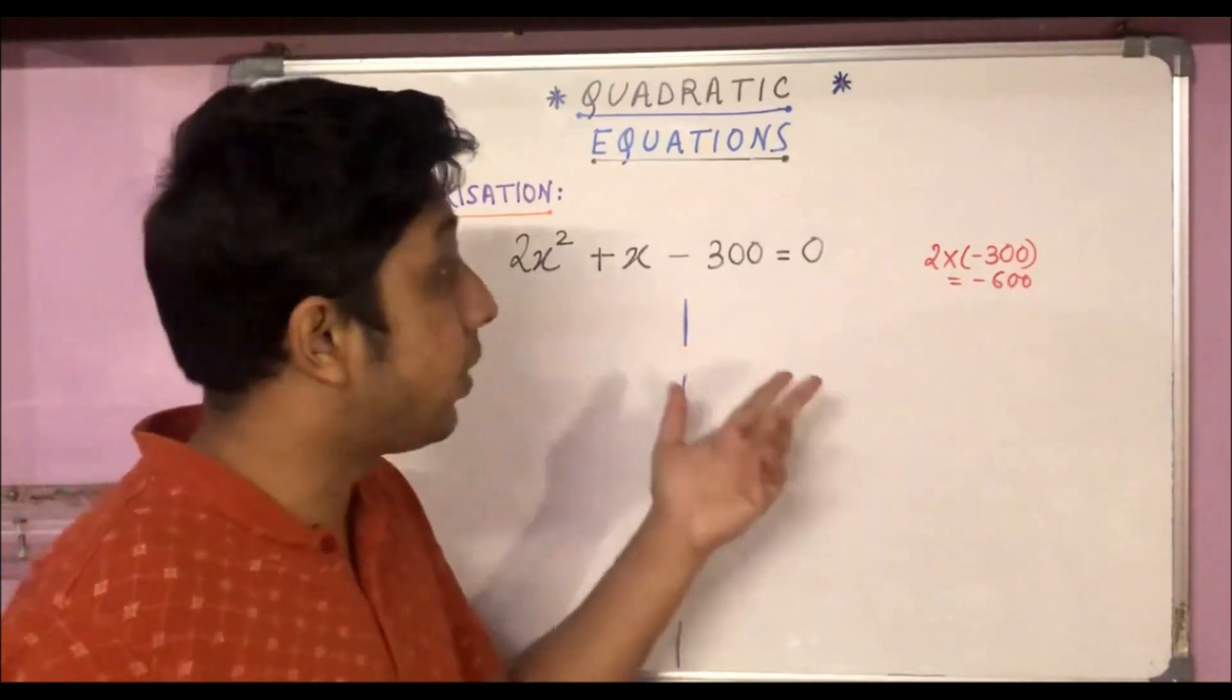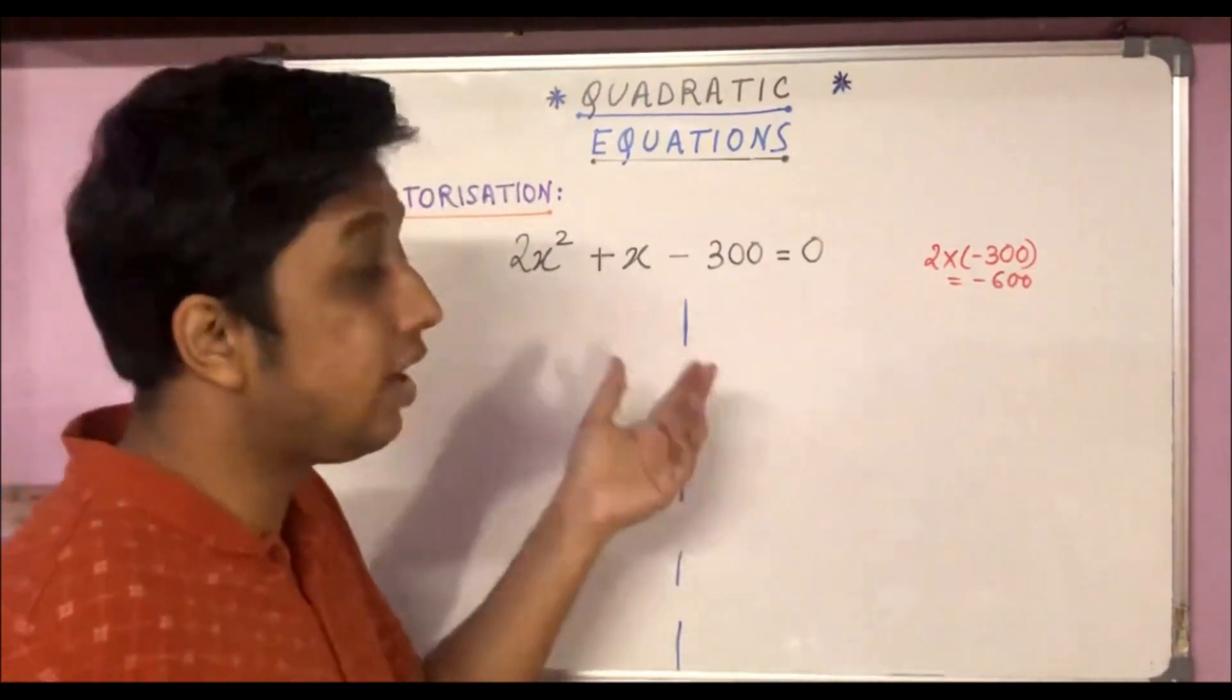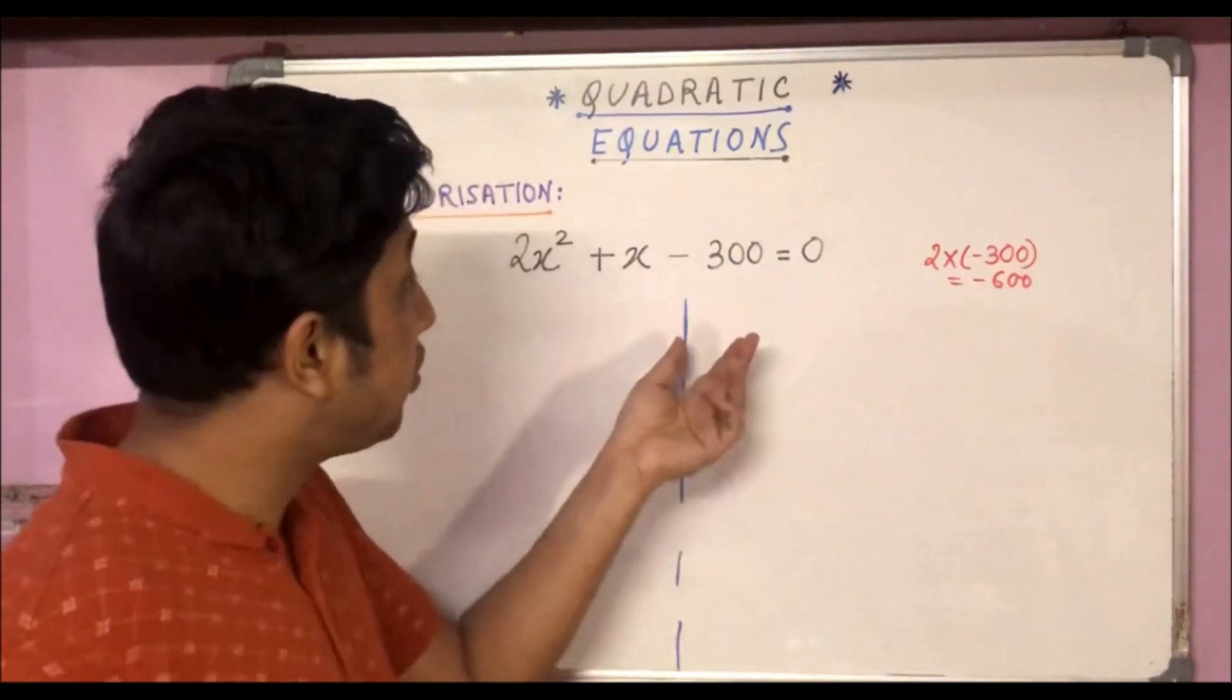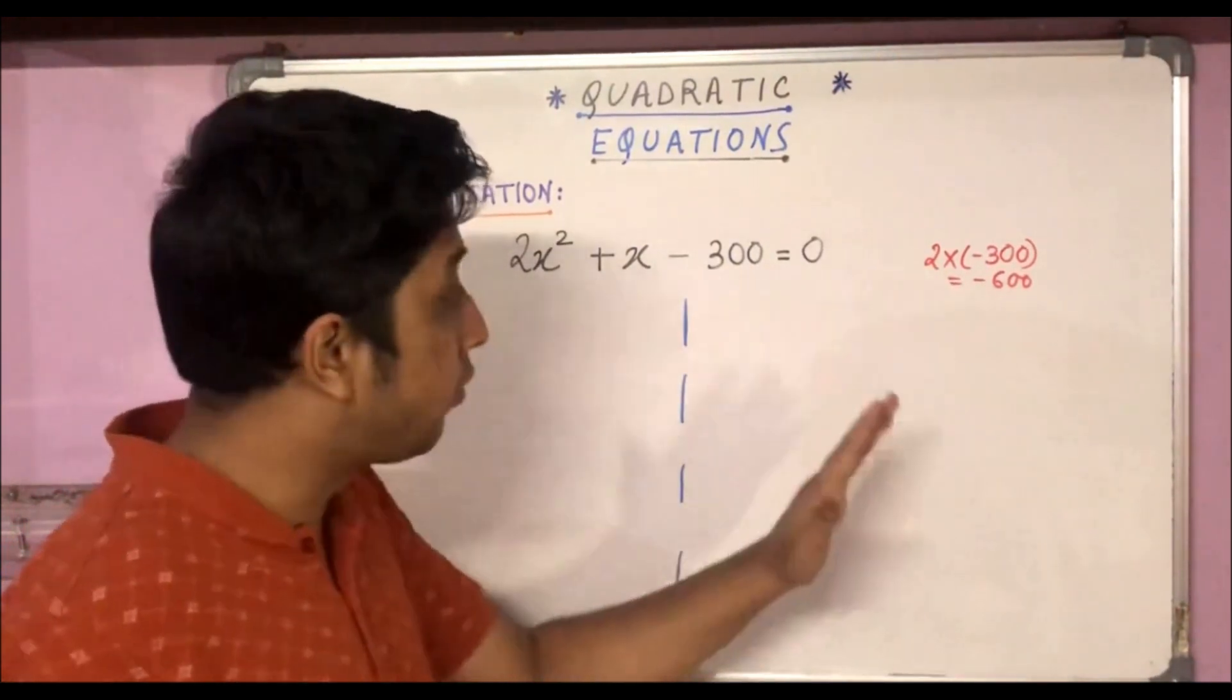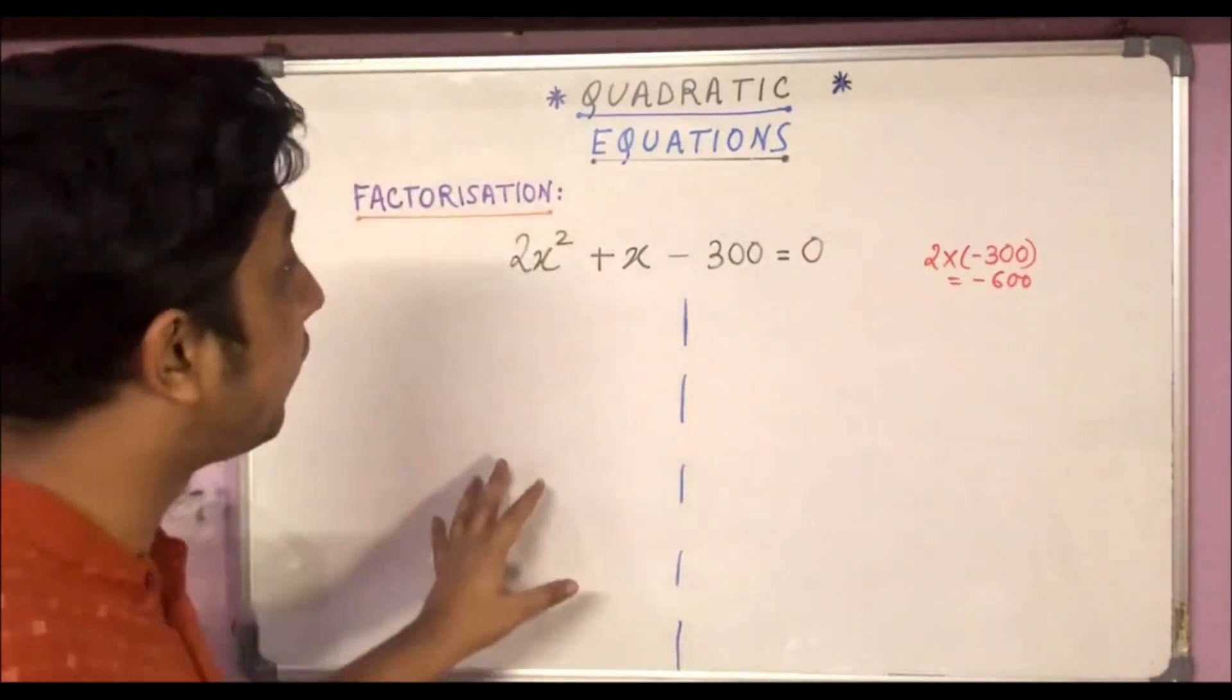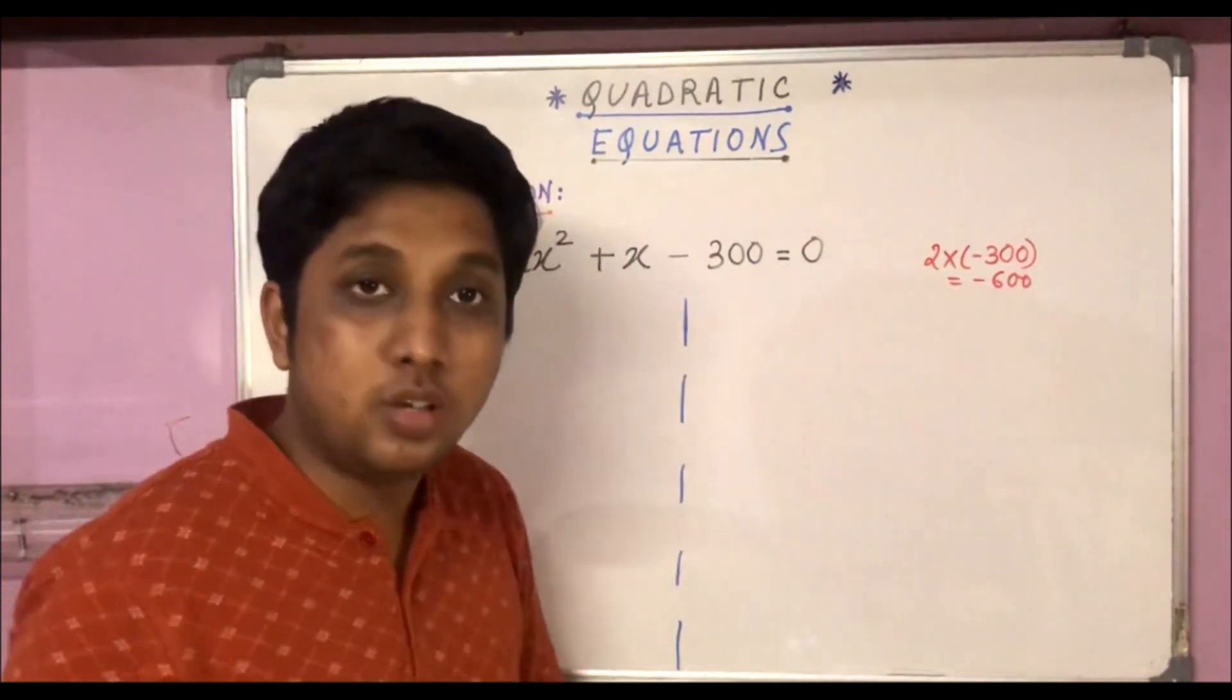So here we can use a very important trick to get the middle-term break. We will just do it in rough, which we can show in the fair work to complete the factorization process.